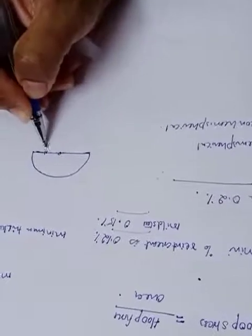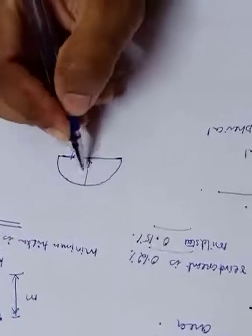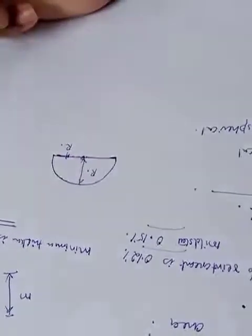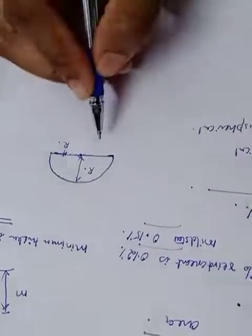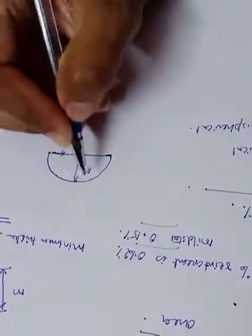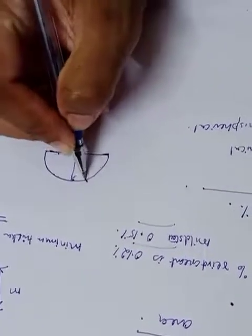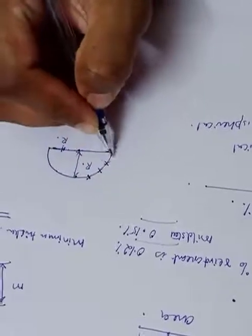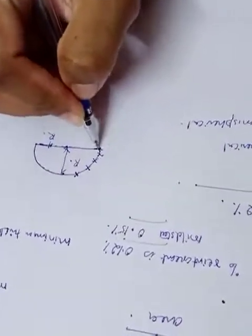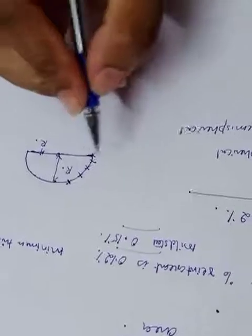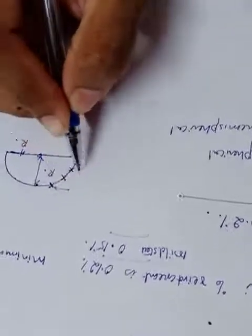In hemispherical domes, if this dimension is R, the rise will also be equal to R. At each location there will be hoop force and meridional thrust. The hoop force acts in the horizontal direction, whereas the meridional thrust acts at an inclination.